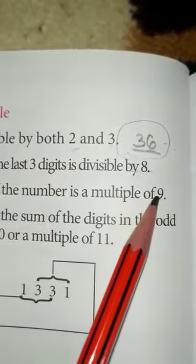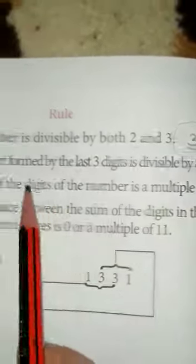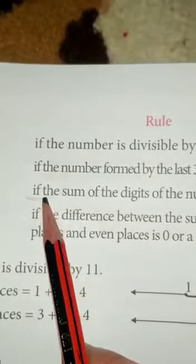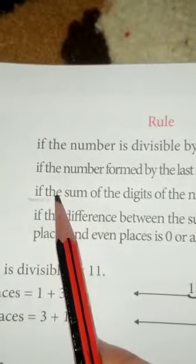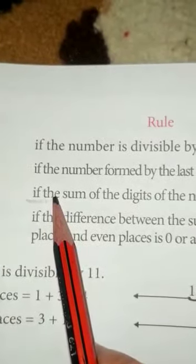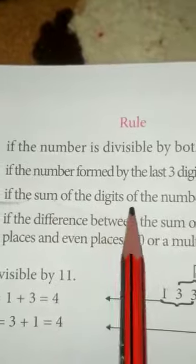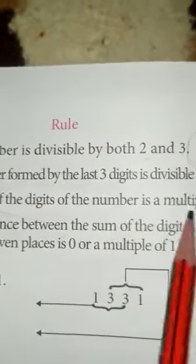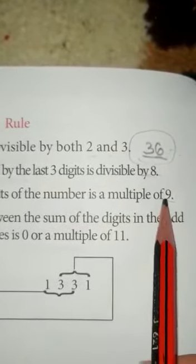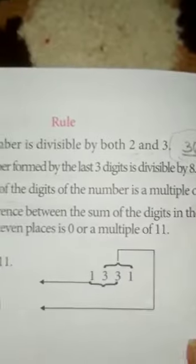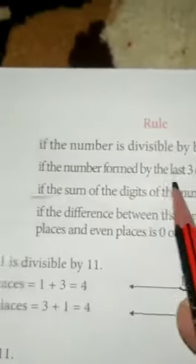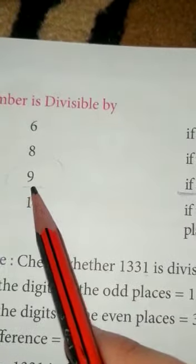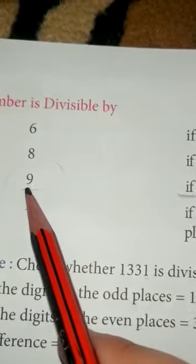The divisibility rule for 9 is the same as the rule for 3. If the sum of the digits of the number is a multiple of 9, it means the whole number is divisible by 9.